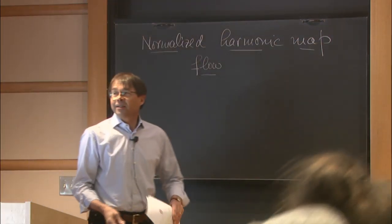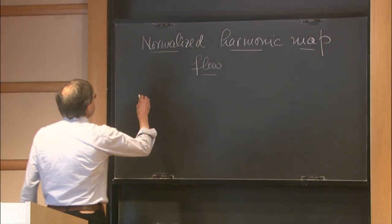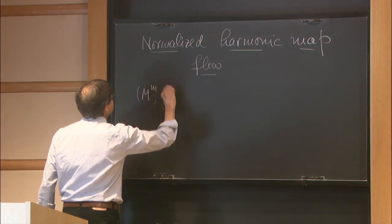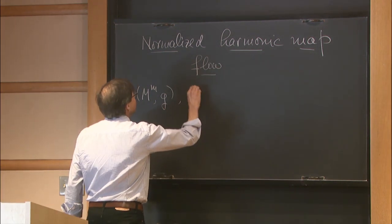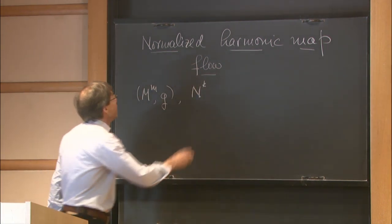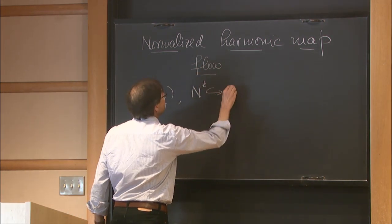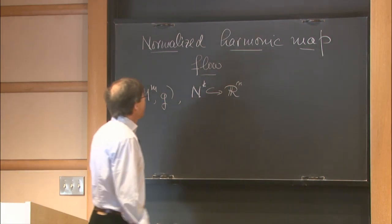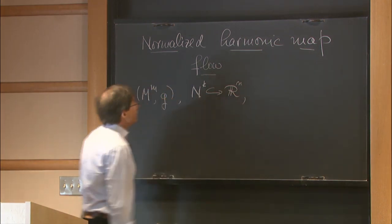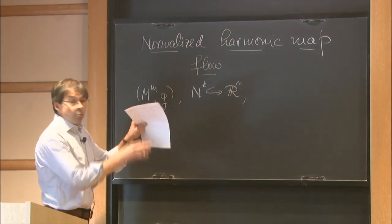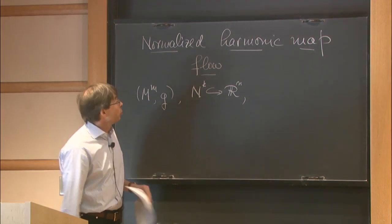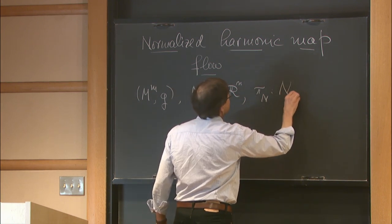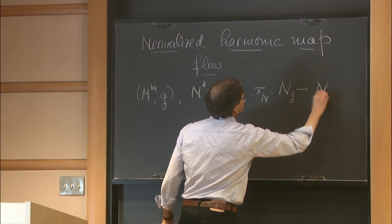Okay, so the setting is probably familiar to all of you. We're looking at some M-dimensional closed manifold with a metric G, and some target manifold, say K-dimensional, and by Nash's embedding theorem, I may assume that N is isometrically embedded in some Euclidean space R^n, and moreover that there is a neighborhood of N where there is a smooth, well-defined nearest neighbor projection pi_N from this delta neighborhood to N.